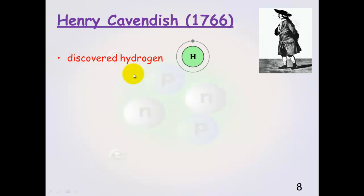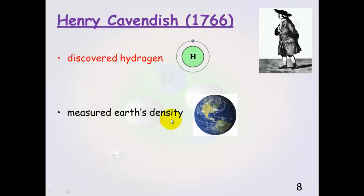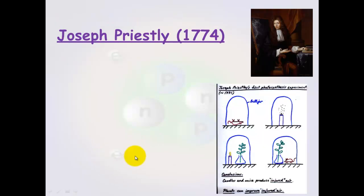Henry Cavendish, he discovered hydrogen. He also measured the earth's density. Now this is a pretty big achievement in 1766 considering only 200 years before that they thought that the world was flat. He used experimental method. I mean it's not like he could use a satellite or anything. And he also did some early electricity experiments.